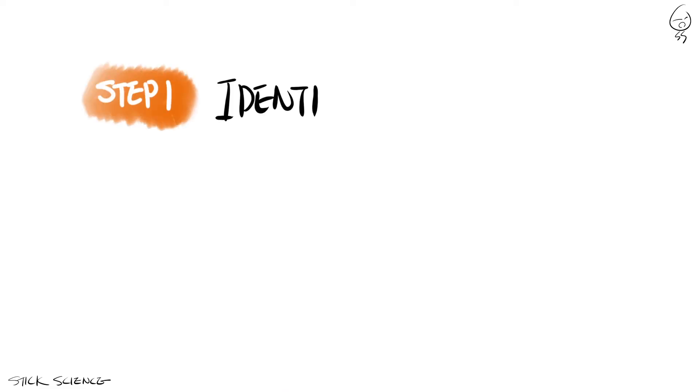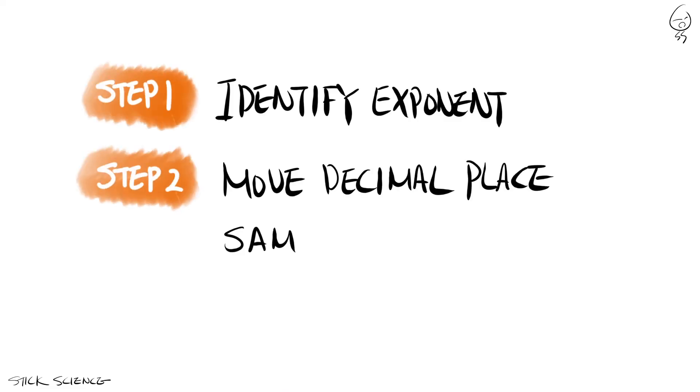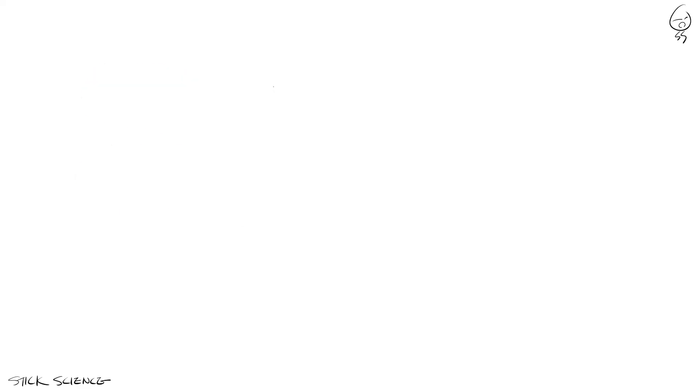In summary, all you need to do is identify the exponent and move the decimal place accordingly. In our example, the exponent was 3, so we moved the decimal point 3 places to the right.